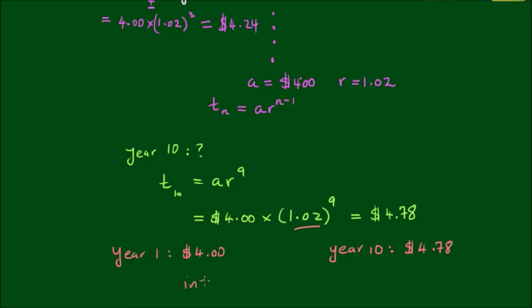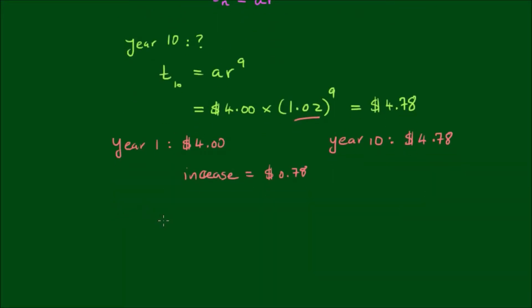Clearly the increase is $0.78. In percentage terms, how much has the cup of coffee increased? This would simply be $0.78 divided by $4.00 by 100%, which works out to be 19.5% approximately. So it's close enough to 20%.